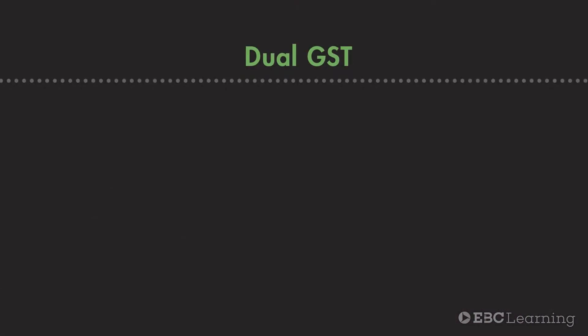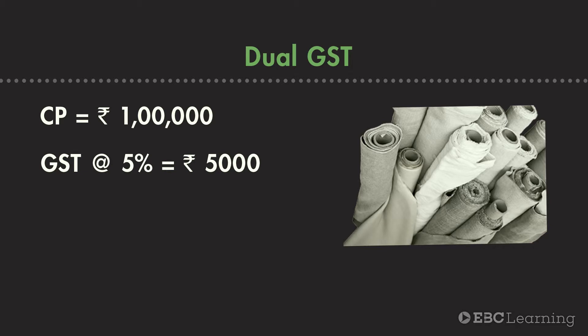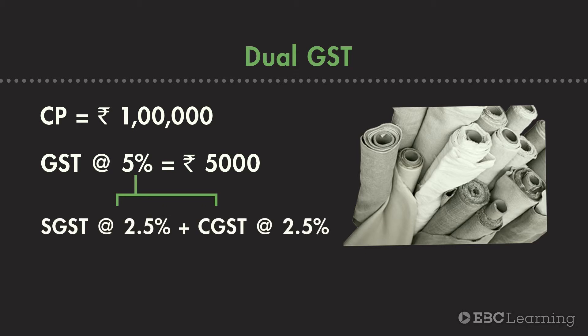Thus, if a dealer in Uttar Pradesh sells goods worth Rs. 1 lakh to a shopkeeper in Uttar Pradesh, then assuming a GST rate of 5%, GST of Rs. 5000 will be applicable. Of this, Rs. 2500 — that is 2.5% — will be collected as CGST, and Rs. 2500 — that is 2.5% — will be collected as SGST.